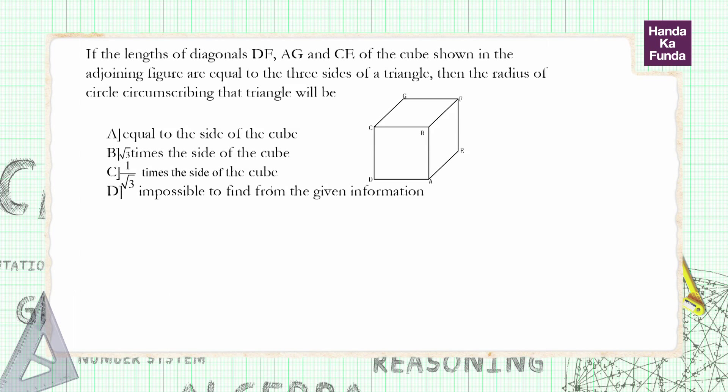In this question, we are given that the lengths of diagonals DF, AG, and CE form a triangle. First, we need to understand that DF, AG, and CE are all body diagonals of the cube. If the side of the cube is a, then the body diagonals are a√3.